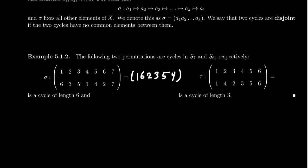And so this map, this permutation sigma is actually equal to the cycle (1, 6, 2, 3, 5, 4). Notice that the element 7 was actually fixed in this permutation.